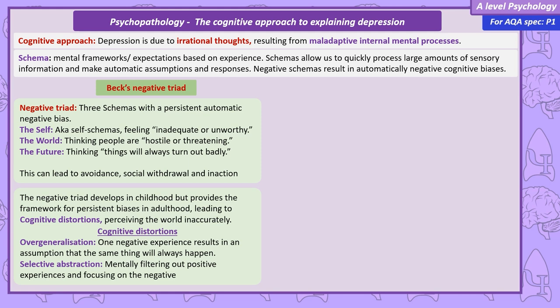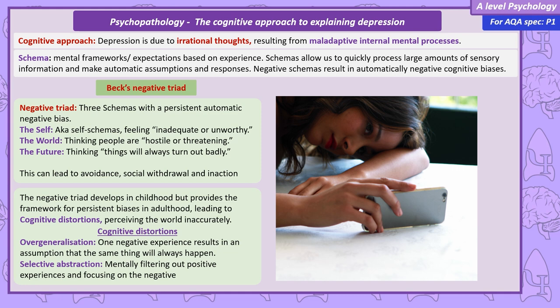Say someone puts up a post on social media and they get lots of positive feedback. Selective abstraction — also known as selective perception — is mentally filtering out all the positive comments and focusing on just that one negative comment.